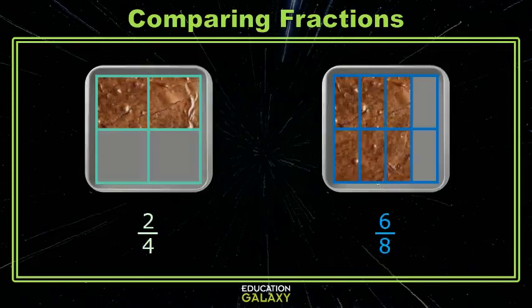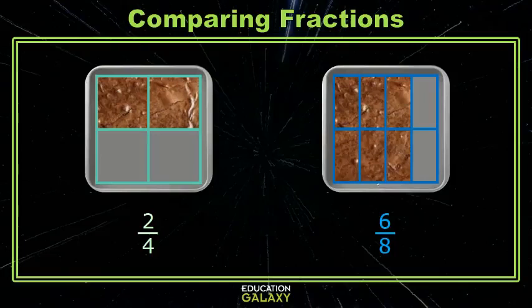Here we're comparing 2 fourths of a pan of brownies to 6 eighths of a pan of brownies. The one on the left appears to be half. The one on the right appears to be more than half. But let's go ahead and find common denominators to be sure.